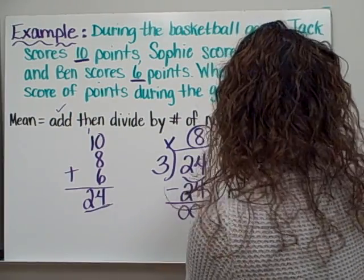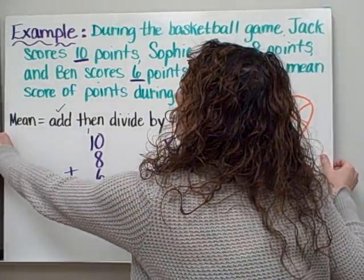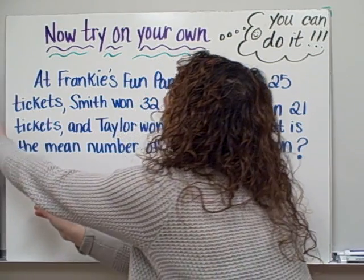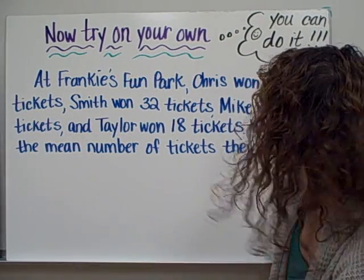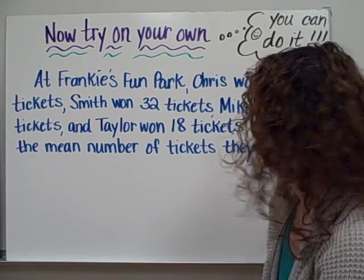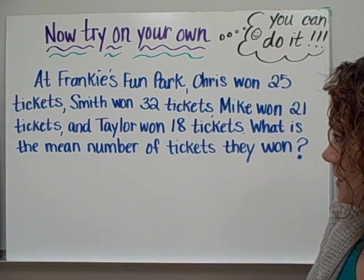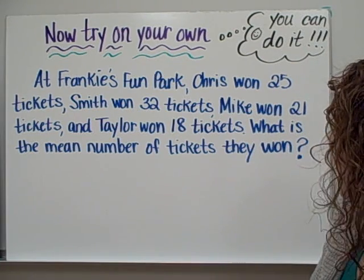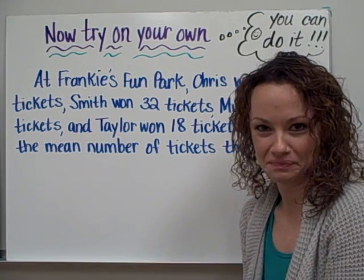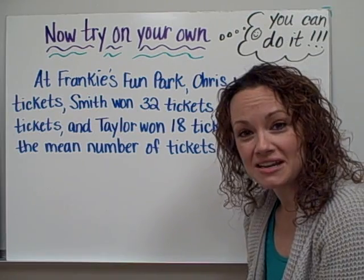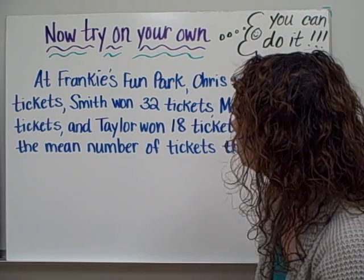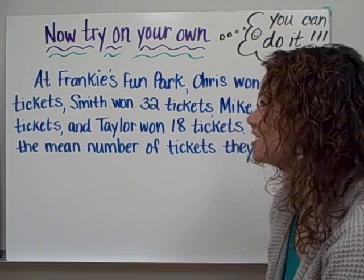Now it's time for you to try one on your own. At Frankie's Fun Park, Chris won 25 tickets, Smith won 32 tickets, Mike won 21 tickets, and Taylor won 18 tickets. What is the mean number of tickets they won? If you need to, you can go back and look at your homework sheet for the steps for finding the mean or average. Good luck solving this problem in box number 3 of your homework sheet.